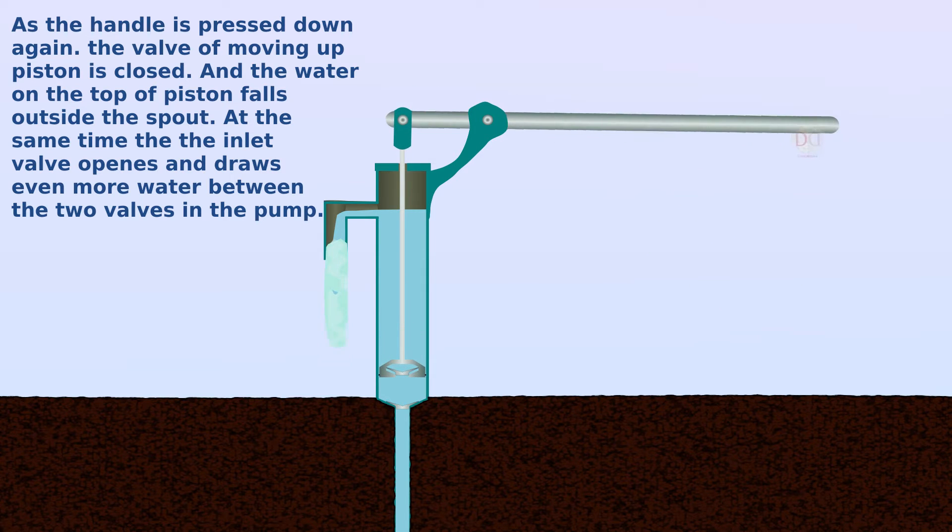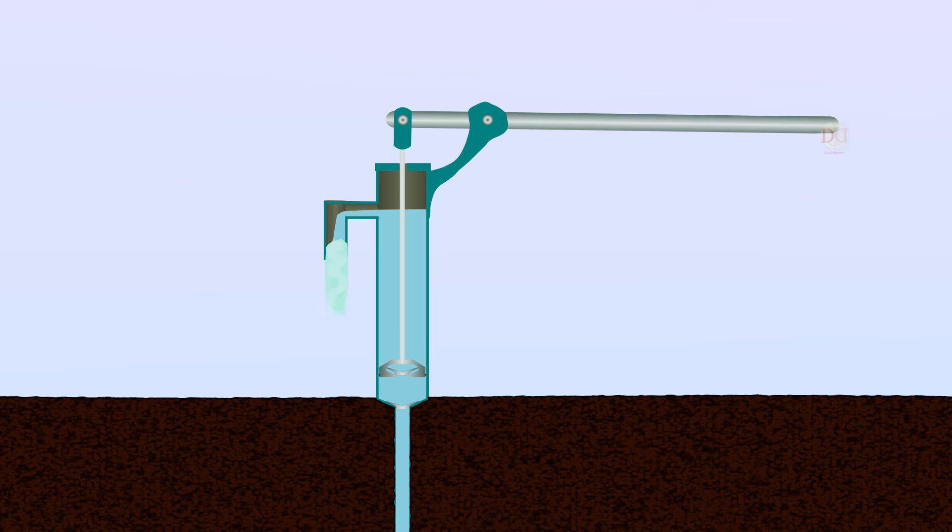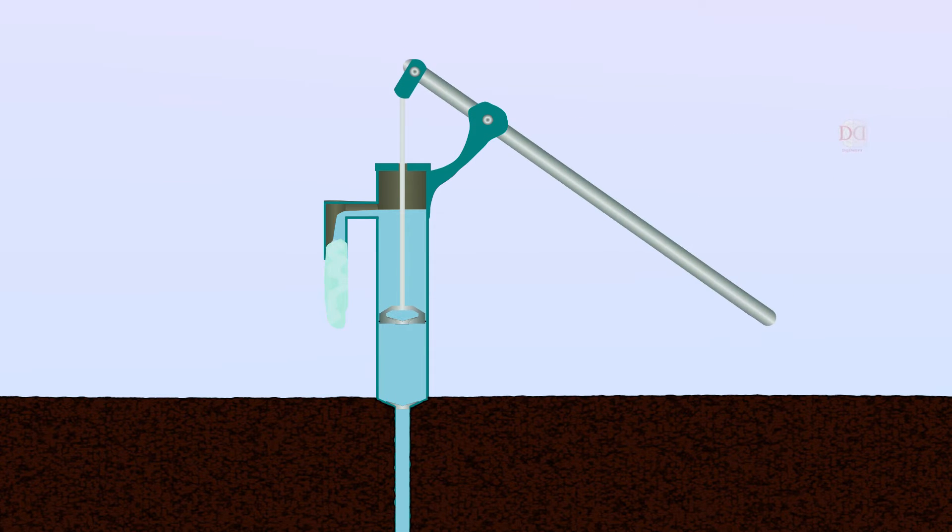At the same time, the inlet valve opens and draws even more water between the two valves in the pump. And that is how a hand pump works.